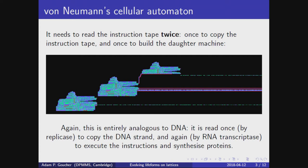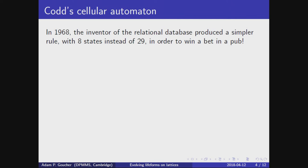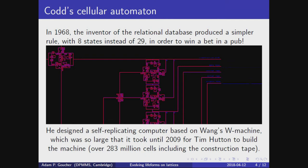After von Neumann, Codd made a simpler cellular automaton, reducing the number of states from 29 down to just 8. Someone called Banks later reduced it to merely 4, but the resulting rule is just too difficult to use — it's like trying to build the Eiffel Tower by launching cannonballs and getting them to collide mid-air so the resulting hot pieces of shrapnel land in exactly the right places to build it gradually, layer by layer.